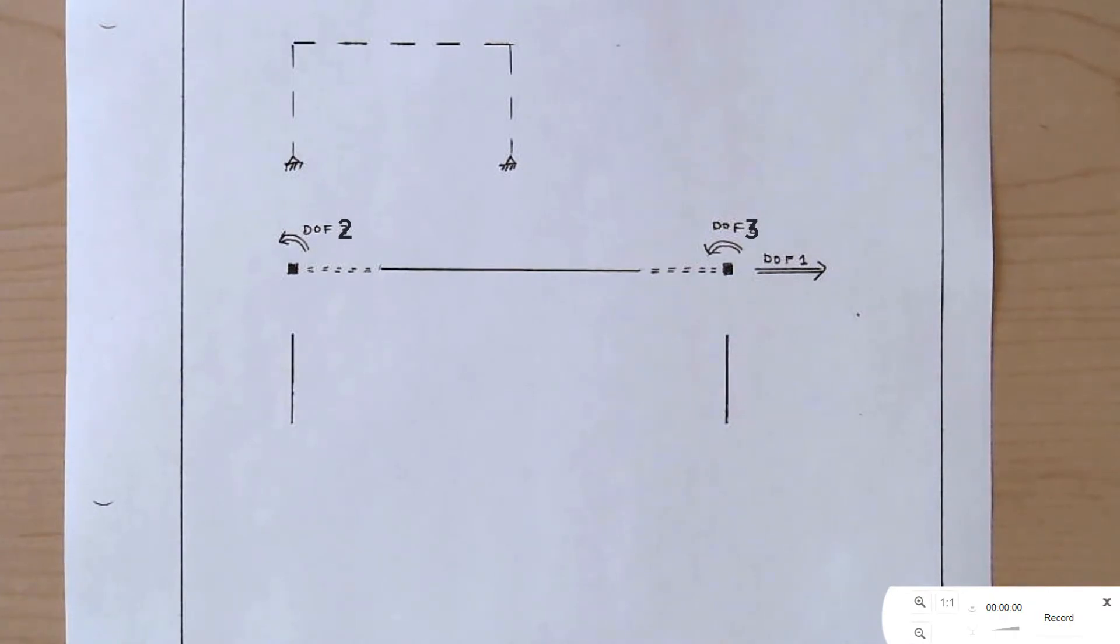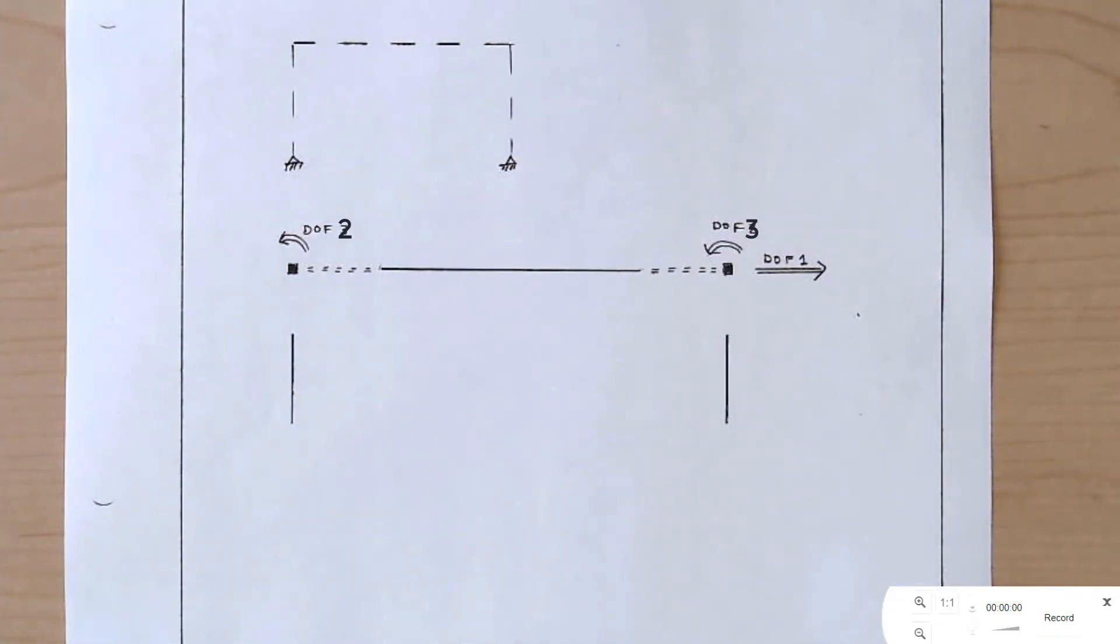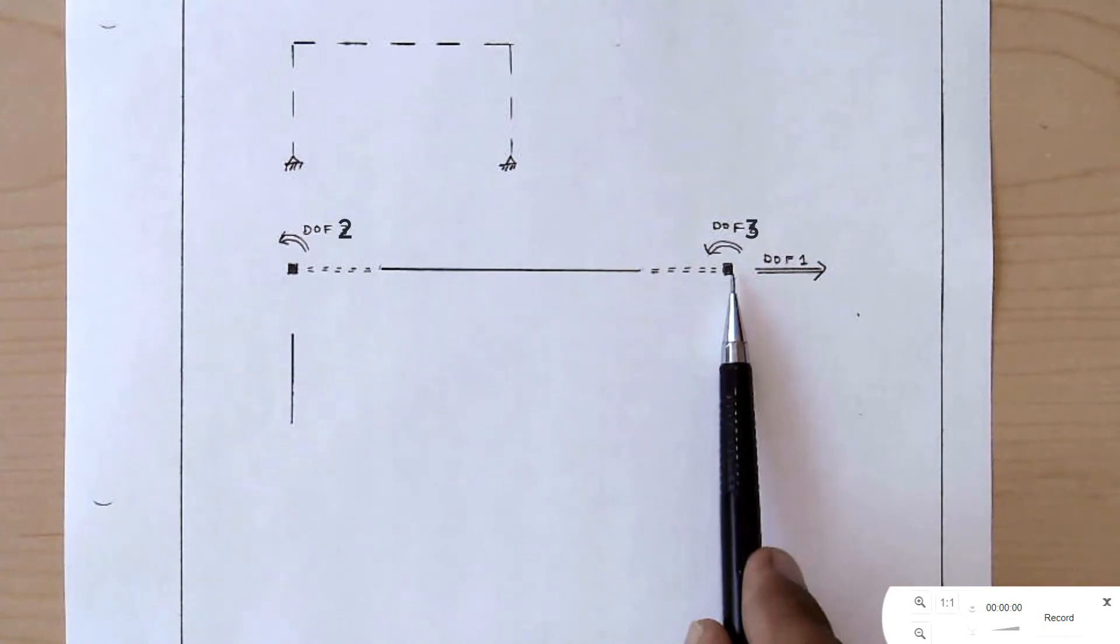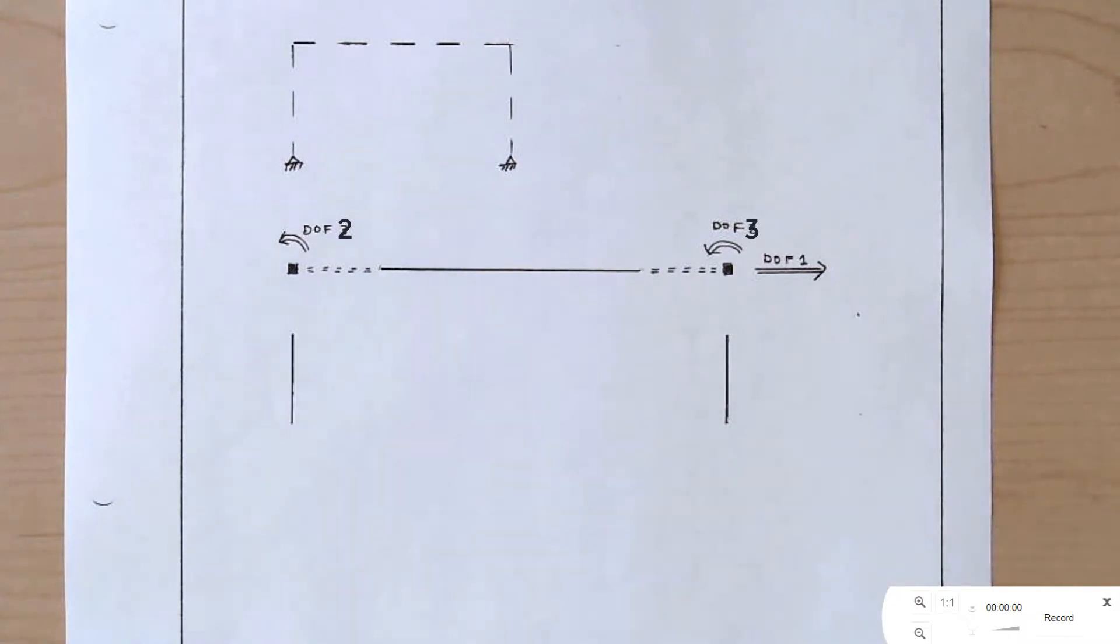We'll do this worksheet three times, one time for each degree of freedom. And what I'm going to show each time is the undeformed shape of the structure, and then free bodies that show each of the members, as well as the two adjoining nodes. I'm showing the degrees of freedom in double arrows, just to keep the arrows clear. And I'm also indicating right here by a dashed double line that degree of freedom 1 engages the entire top story. So if I pull this node to the right, because of the axial rigidity of this member, I'm also going to pull this node to the right.